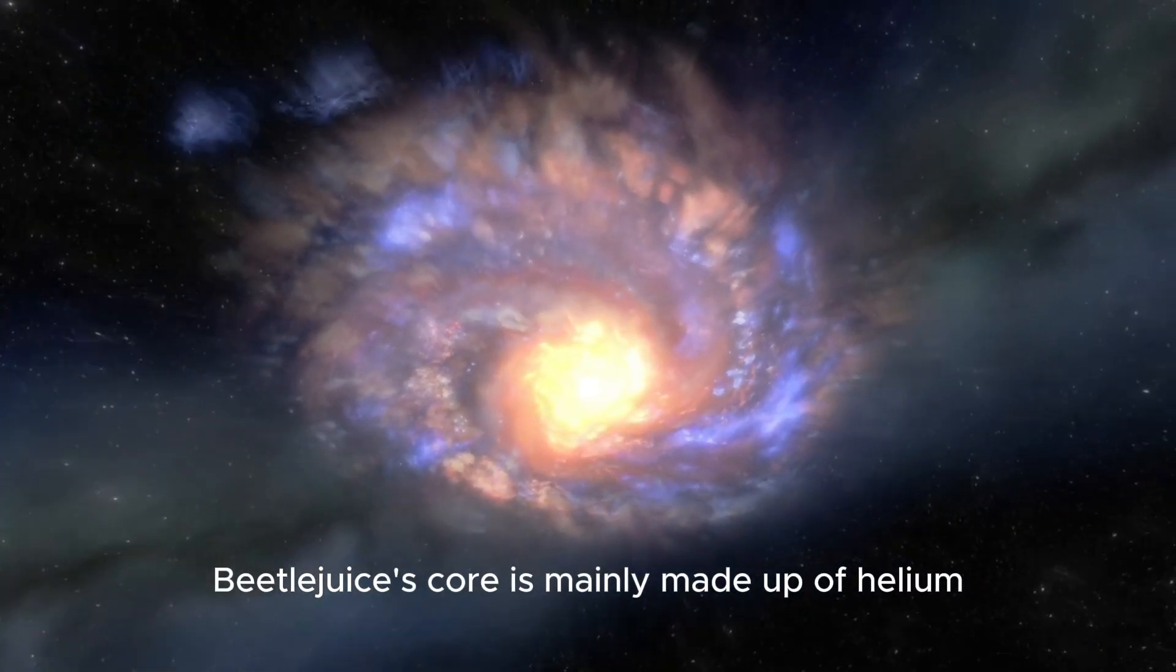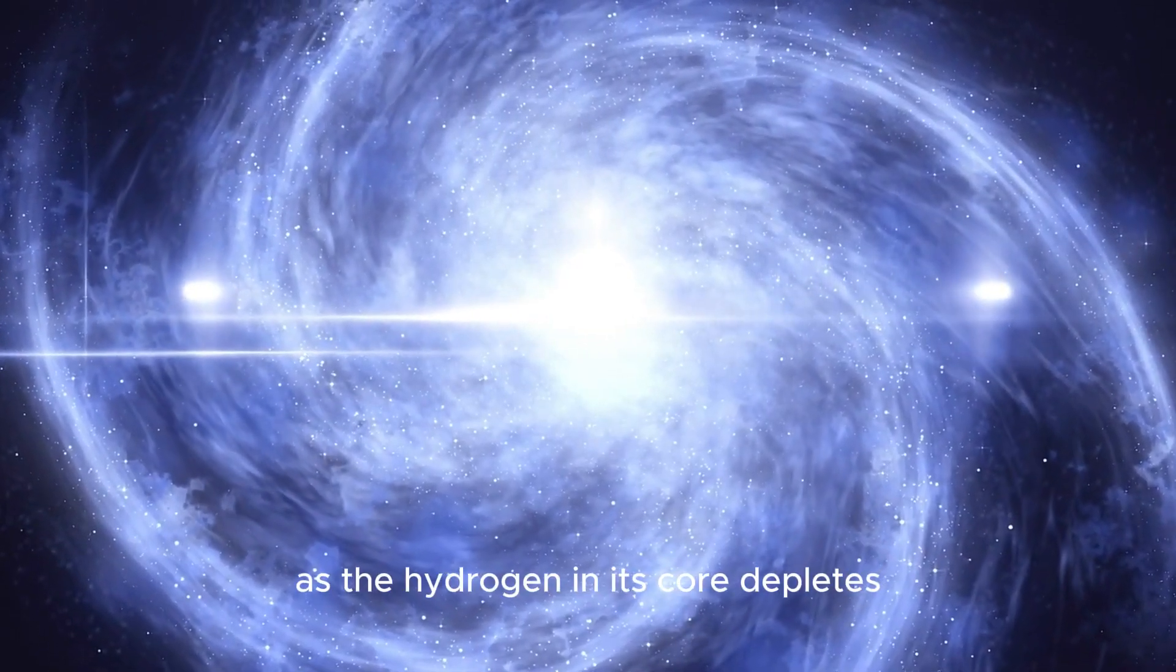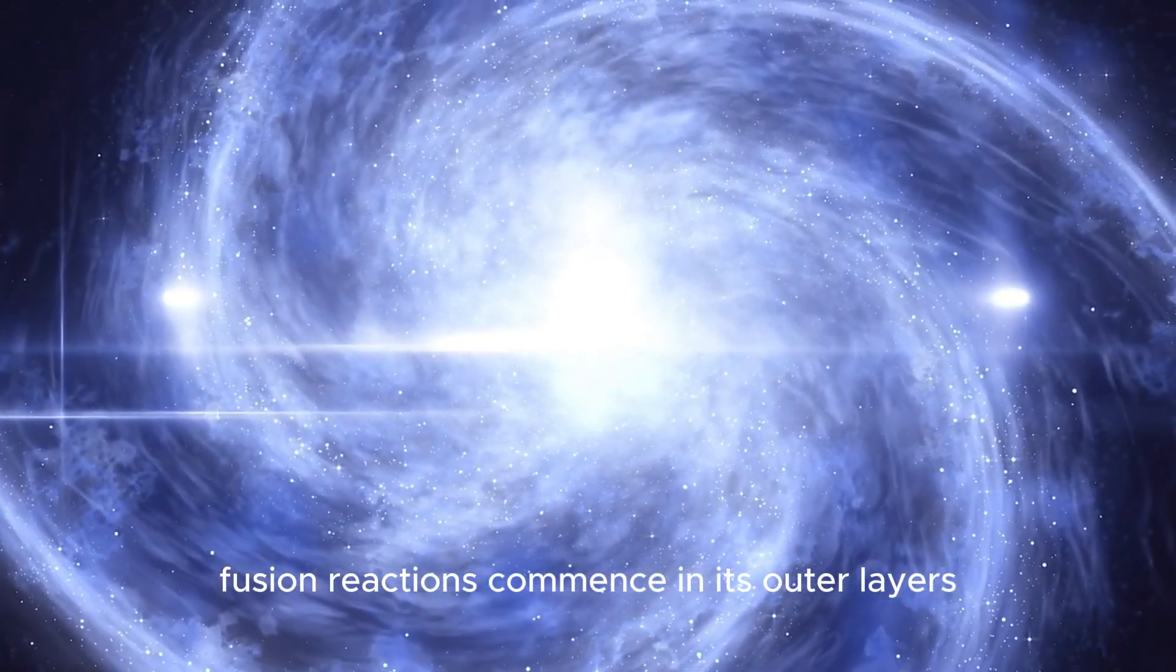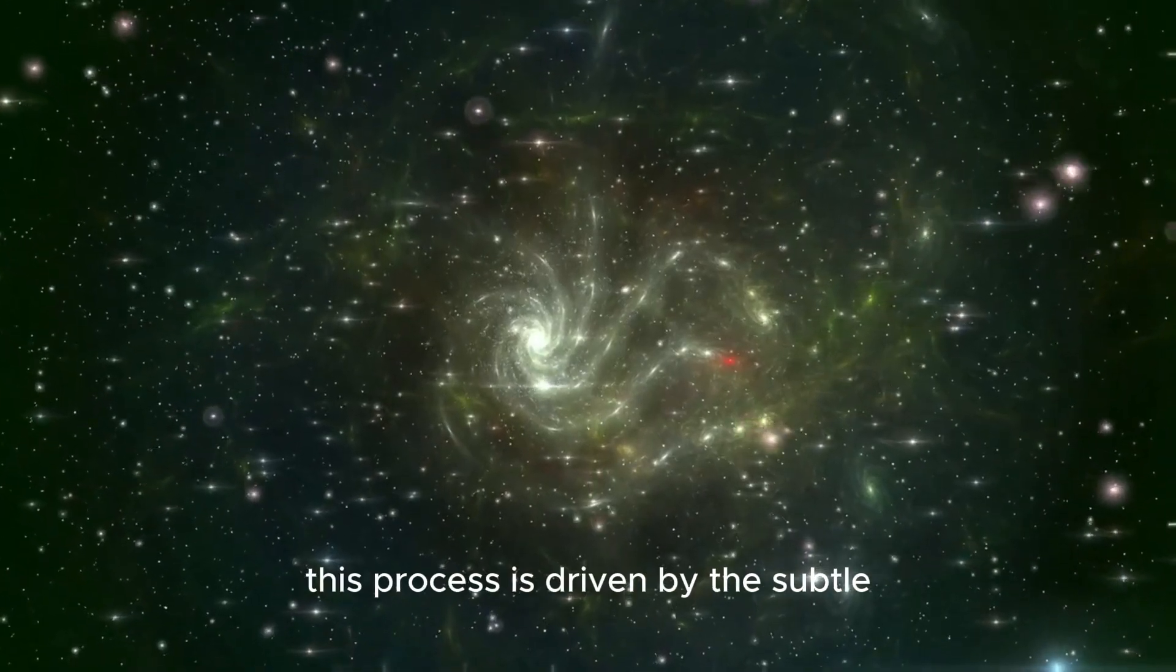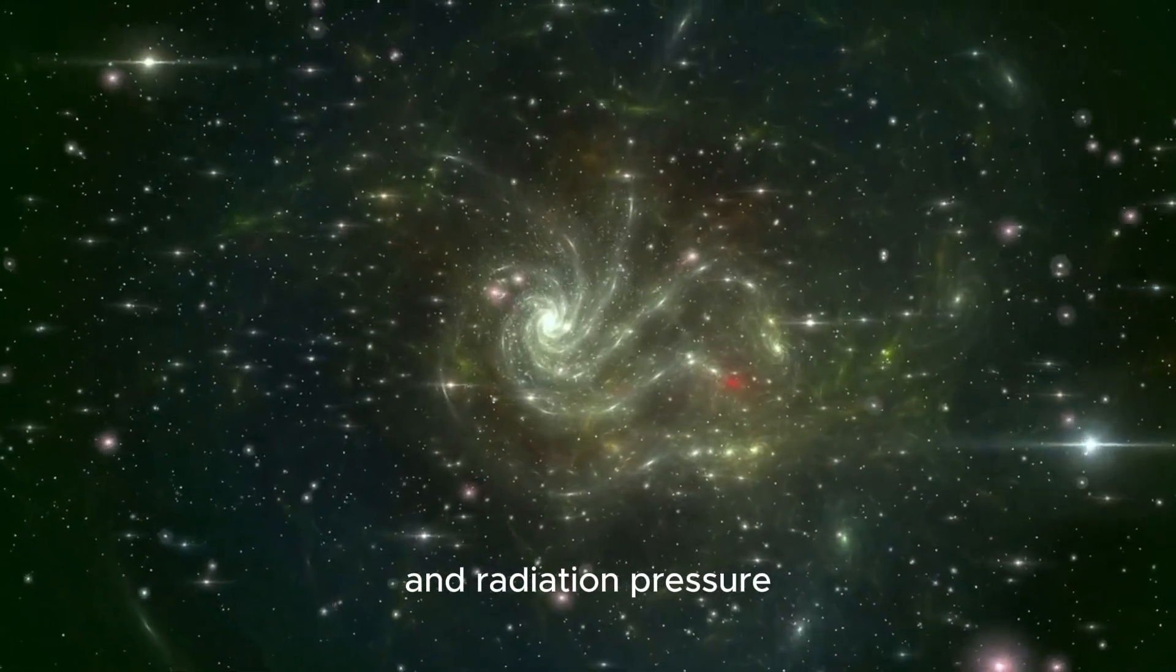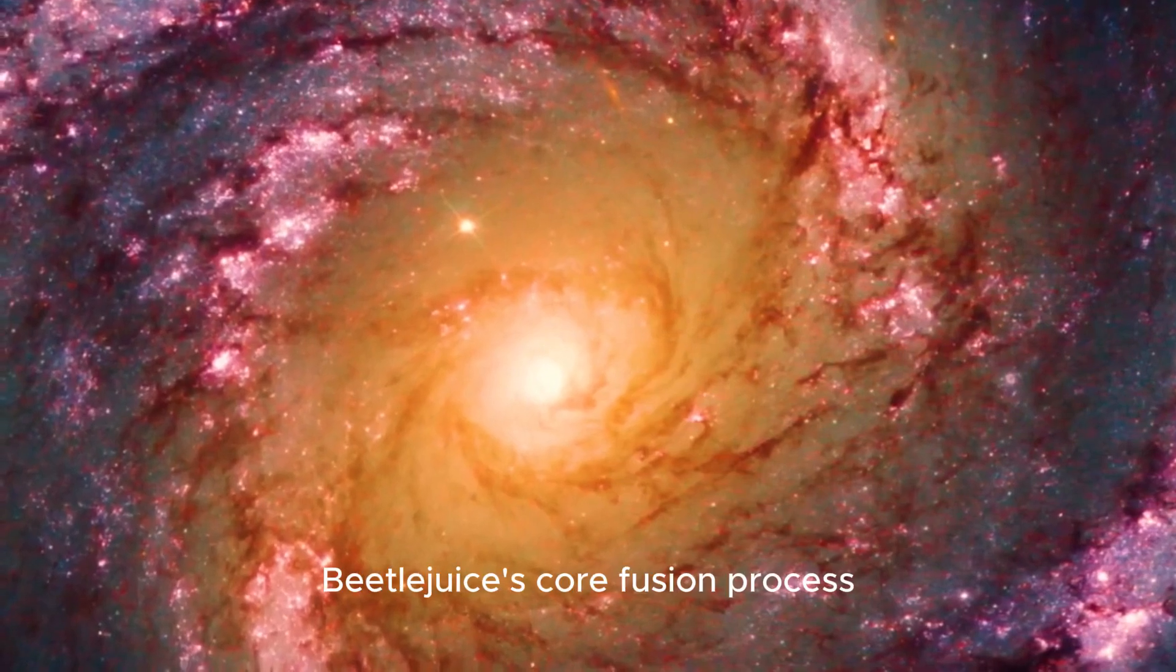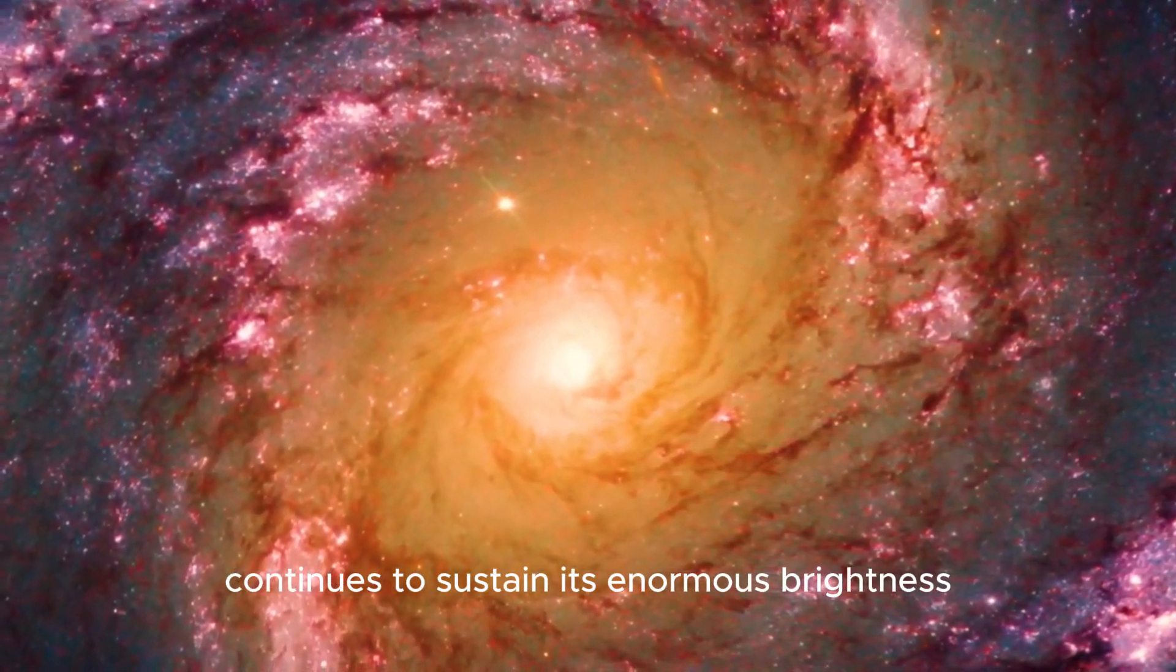Betelgeuse's core is mainly made up of helium and heavier elements such as carbon and oxygen. As the hydrogen in its core depletes, fusion reactions commence in its outer layers, causing the star to enlarge. This process is driven by the subtle equilibrium between gravitational forces and radiation pressure, which ultimately leads to the star's supergiant phase.